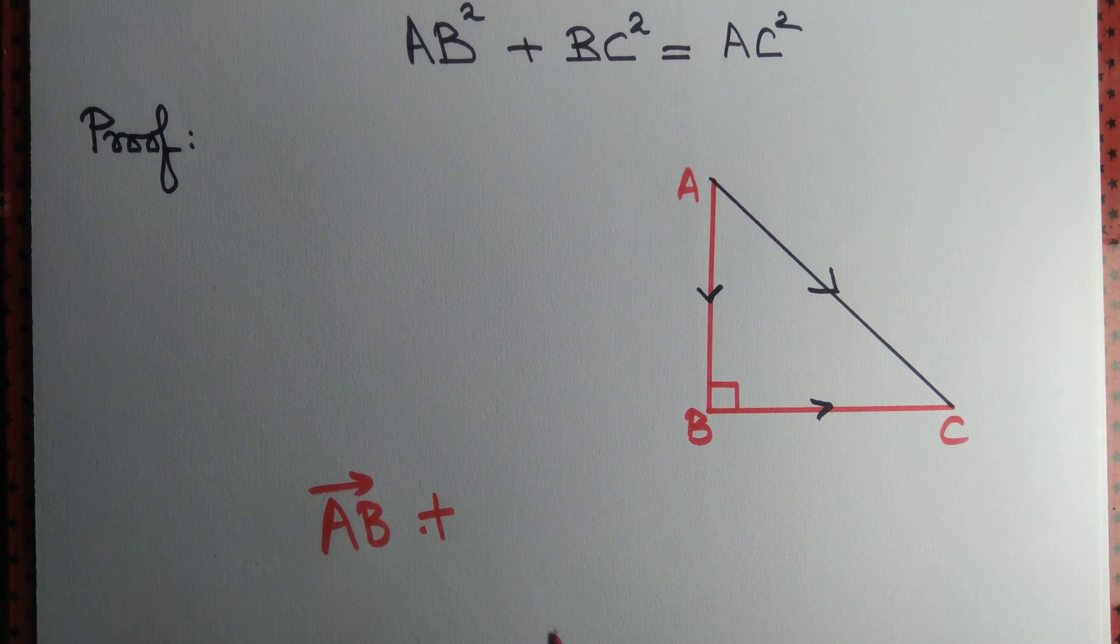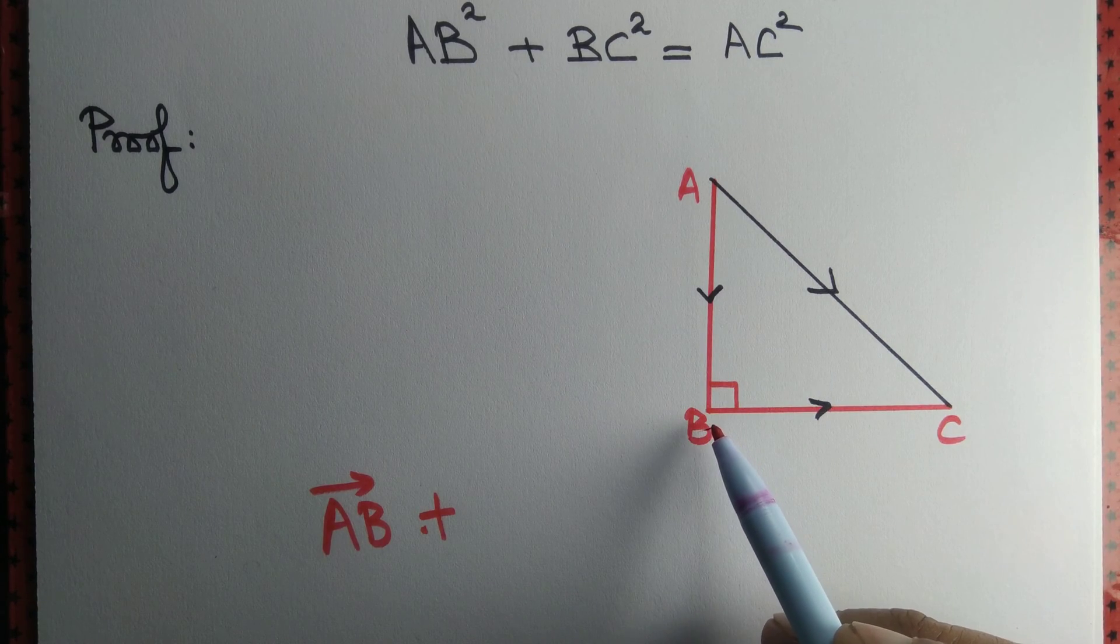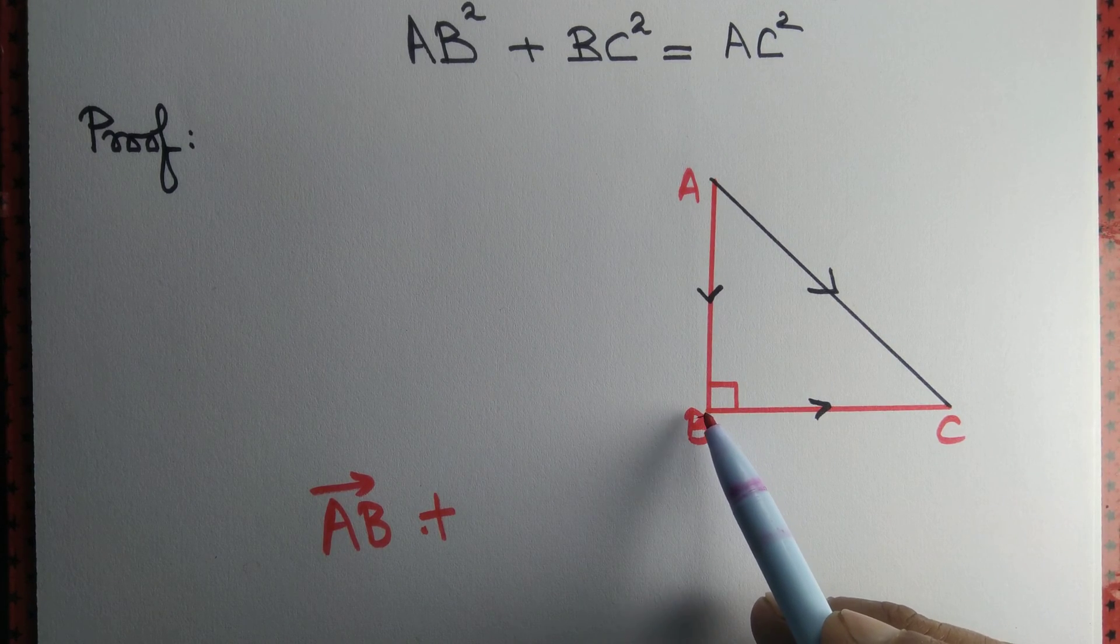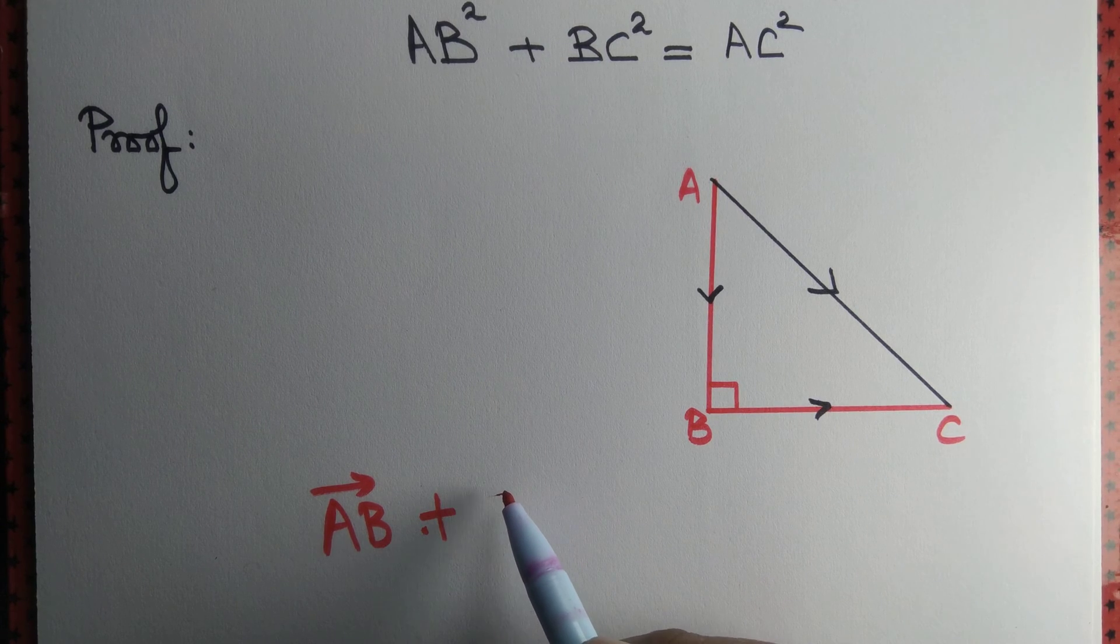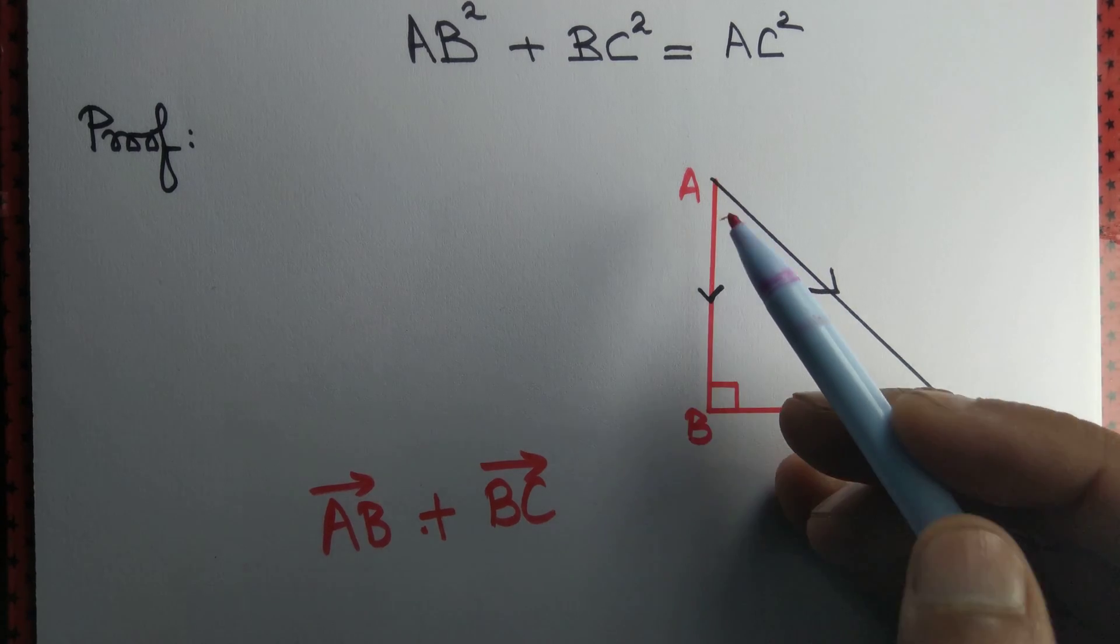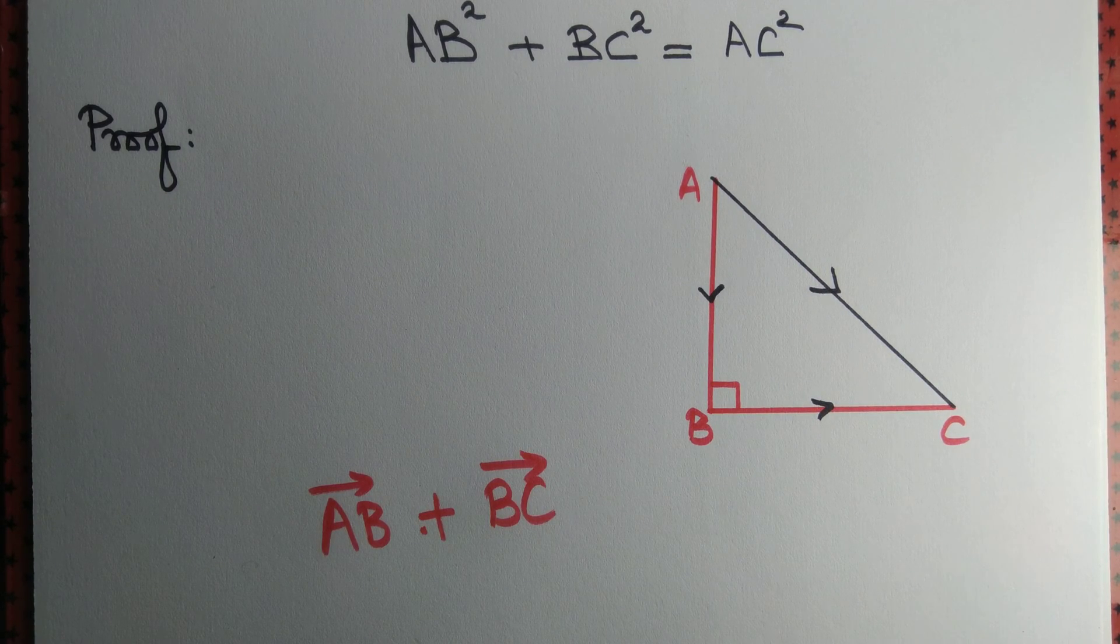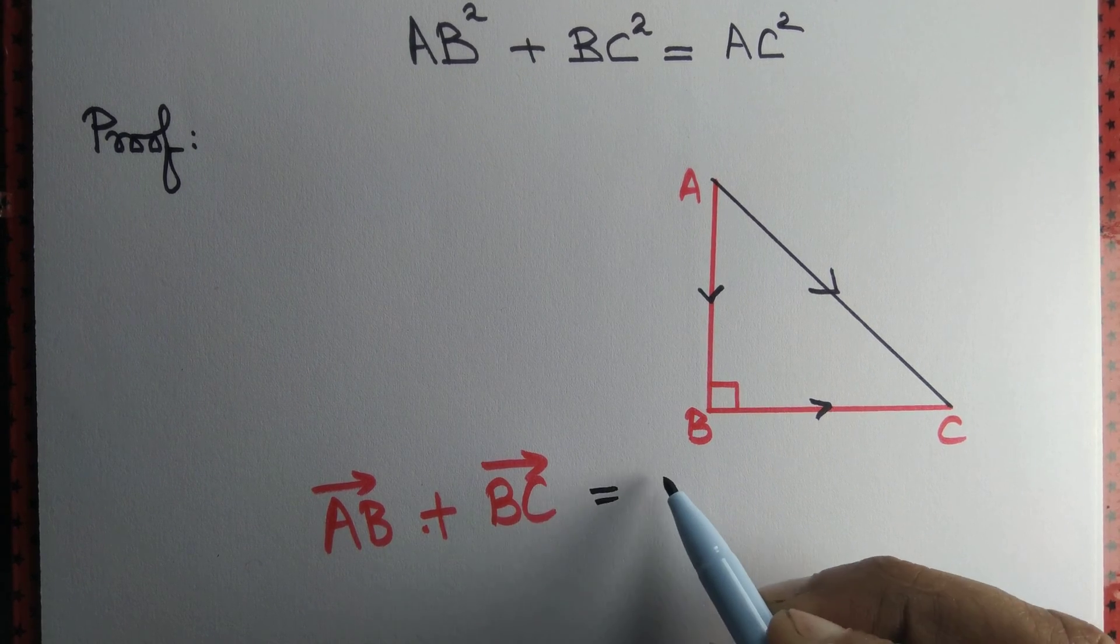We are moving starting from A, moving to B, and then we are moving from B to C. That is same as starting from A and moving to C. AB plus BC equal to AC.